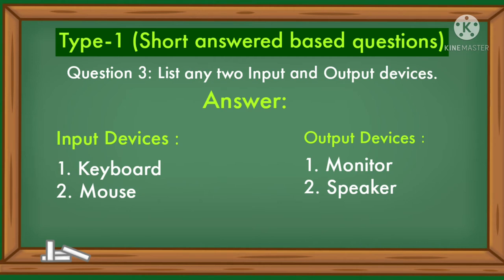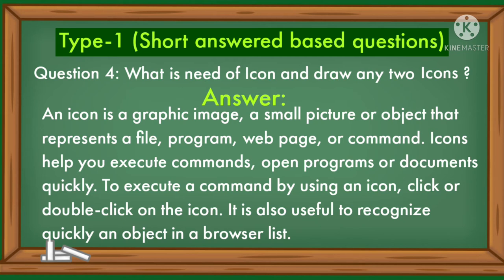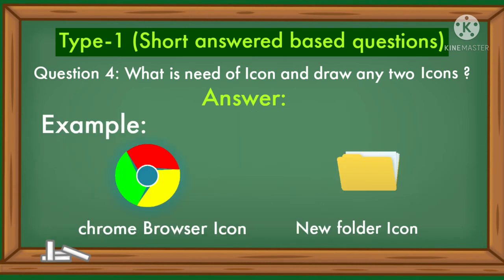What is the need of an icon, and draw any two icons? An icon is a graphic image — a small picture or object that represents a file, program, web page, or command. Icons help you execute commands and open programs or documents quickly. To execute a command using an icon, click or double-click on it. It is also useful to recognize an object quickly in the browser. Two icons shown are the Chrome browser icon and the new folder icon.